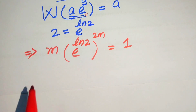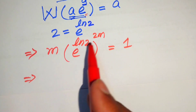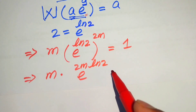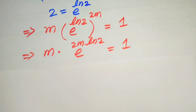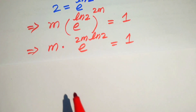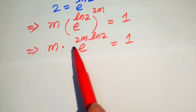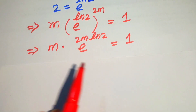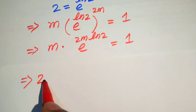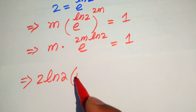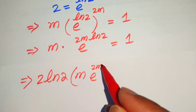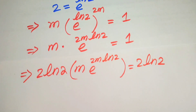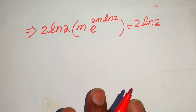Applying the exponent multiplication property, the exponents multiply and we get e to the power of 2m·log 2 equals 1. To form the standard Lambert W function, we multiply both sides by 2·log 2, giving m times e to the power of 2m·log 2 equals 2·log 2 on the right hand side.